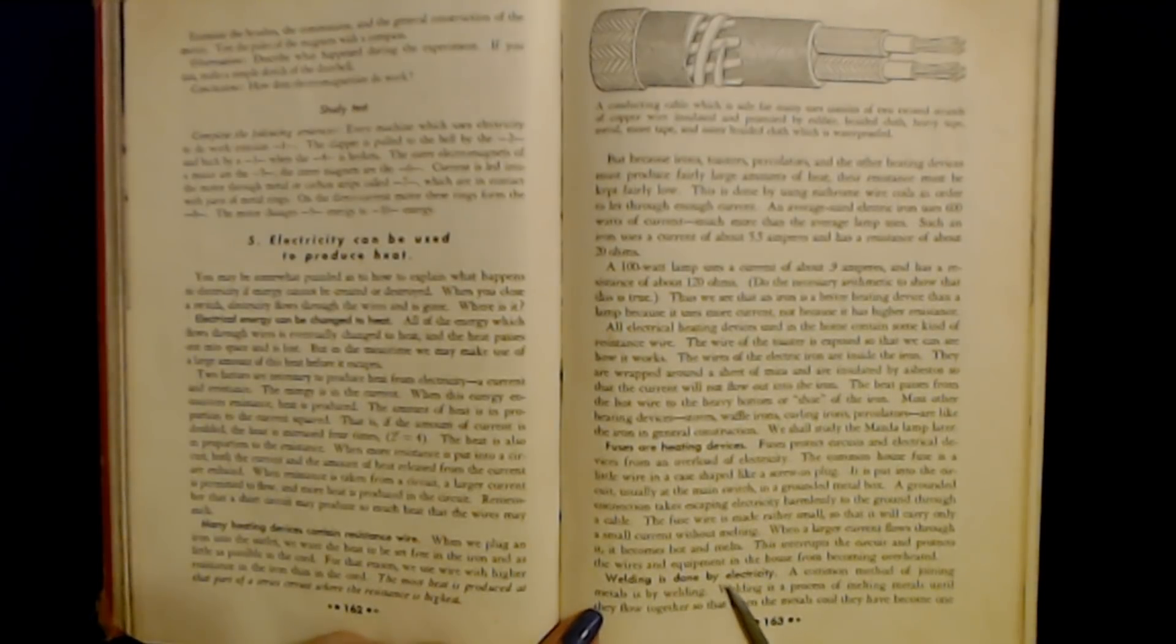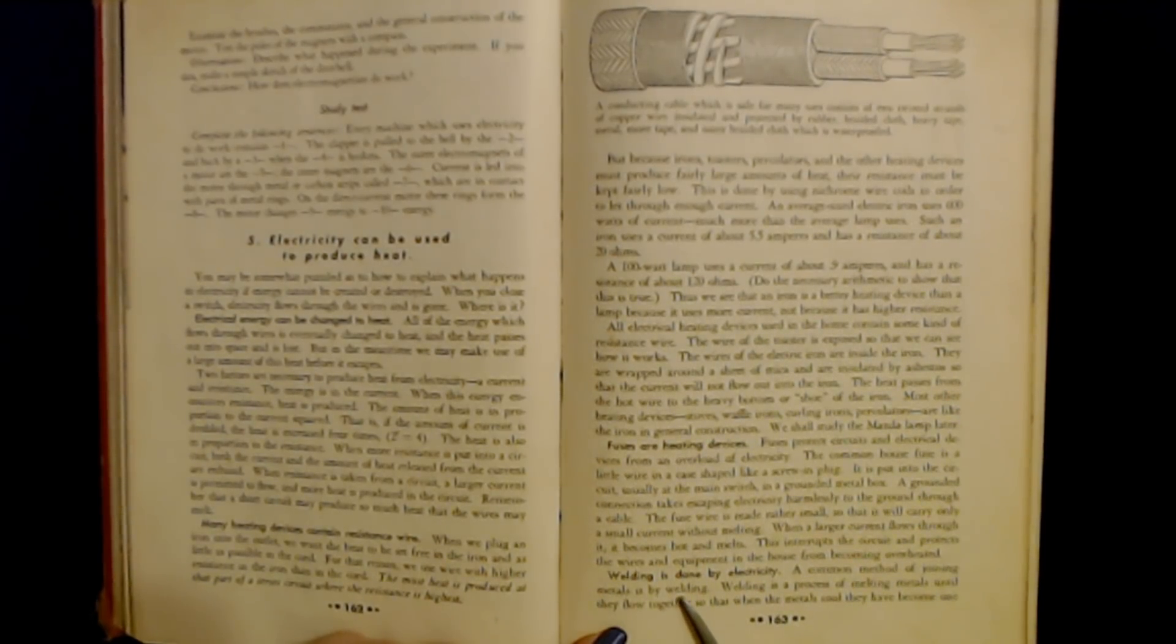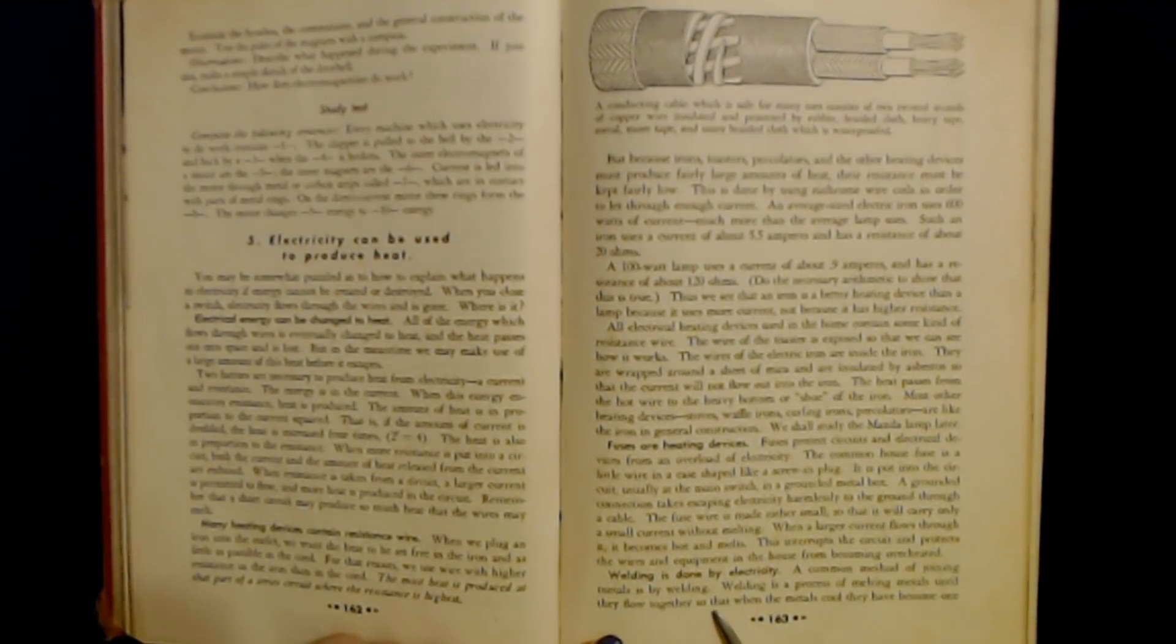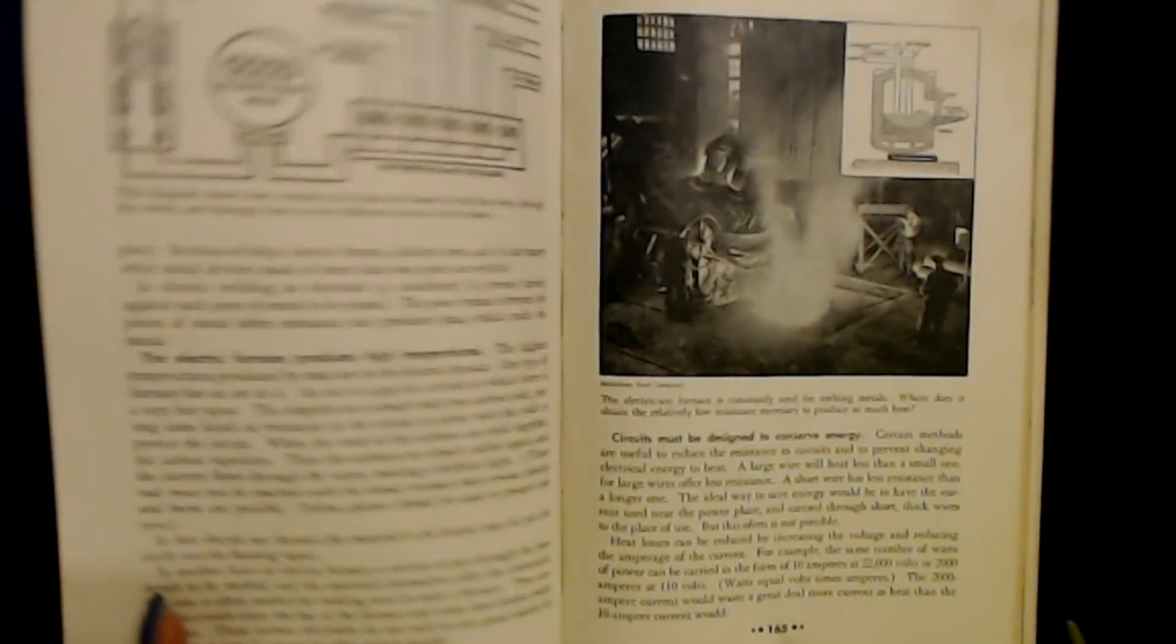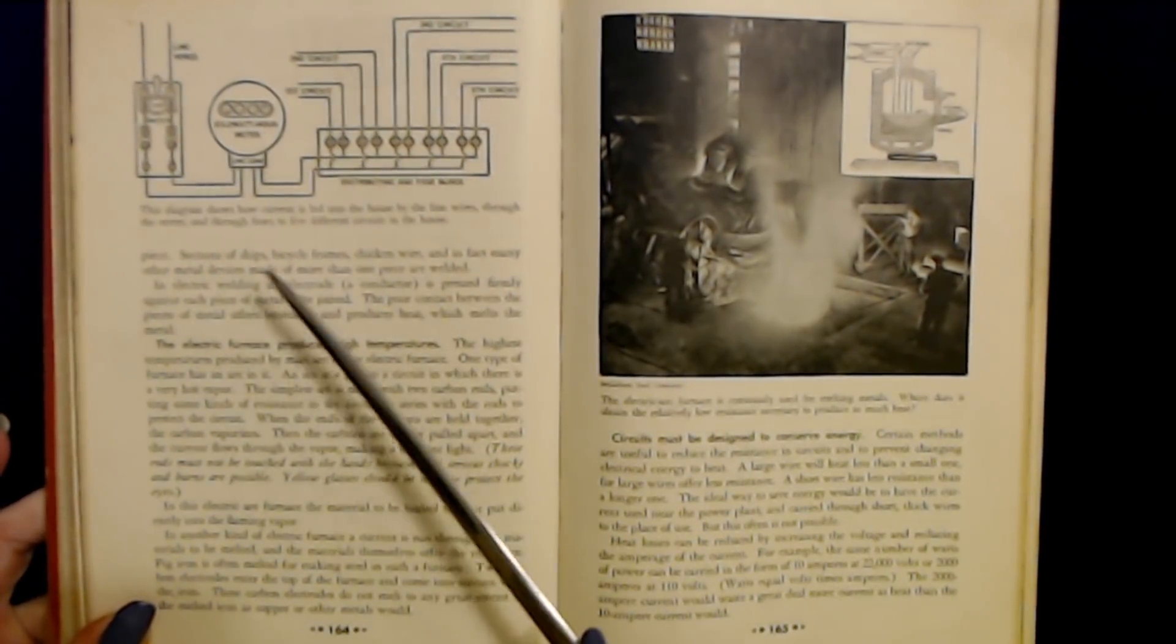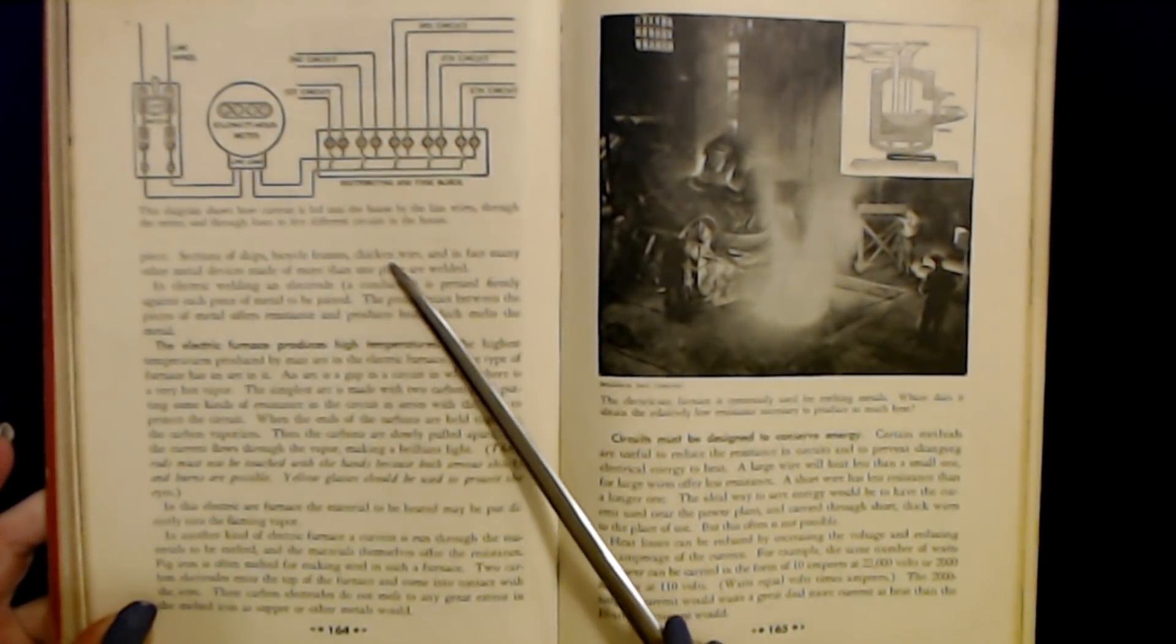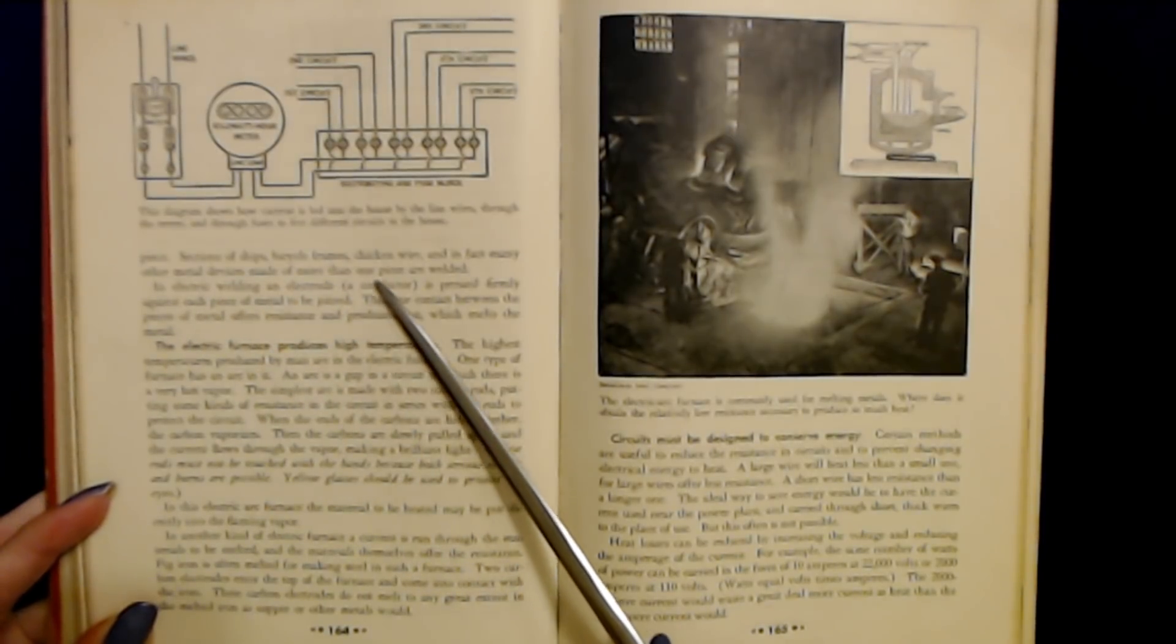Welding is done by electricity. A common method of joining metals is by welding. Welding is a process of melting materials until they flow together so that when the metals cool they have become one piece. Sections of ships, bicycle frames, chicken wire, and in fact many other metal devices made of more than one piece are welded.